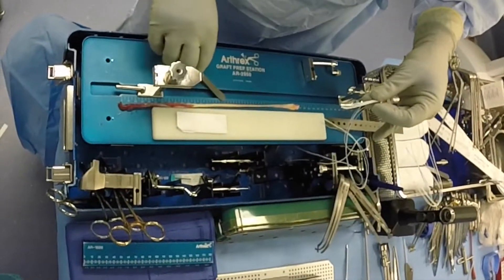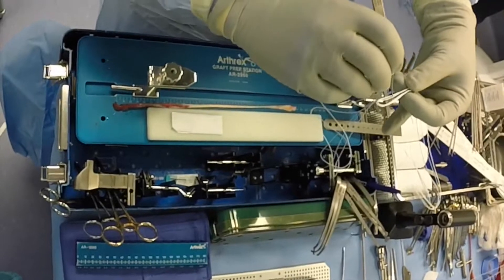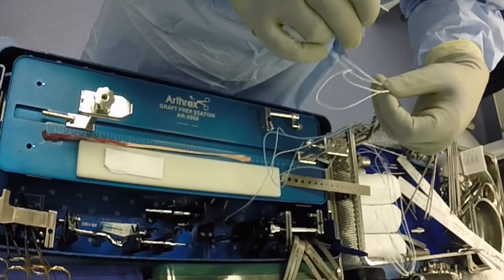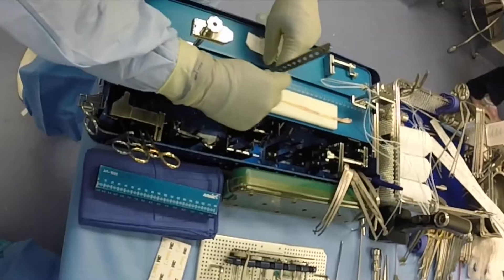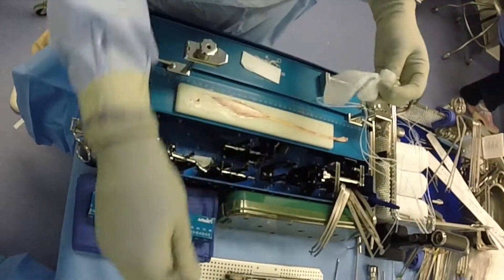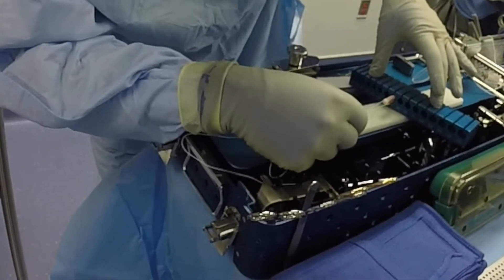A second TightRope is then lengthened, and this will be for our tibial side. Our semitendinosus autograft is then stripped of any muscle and then sized.